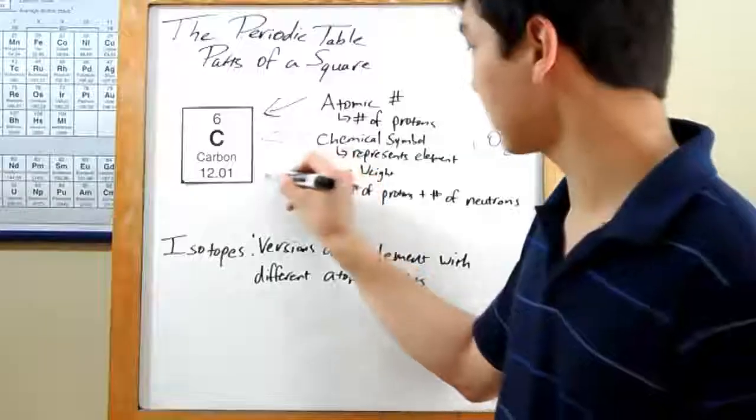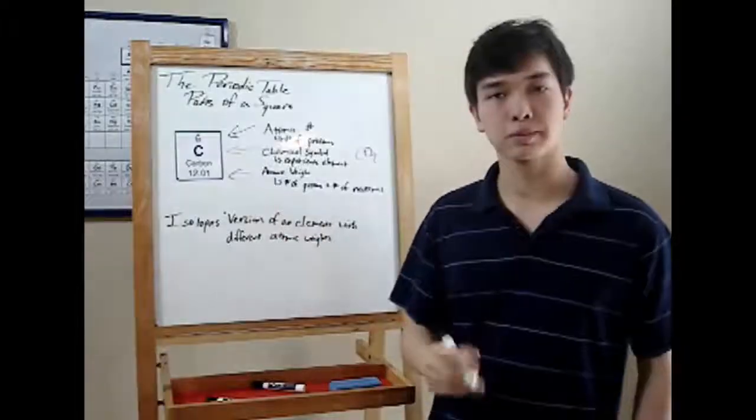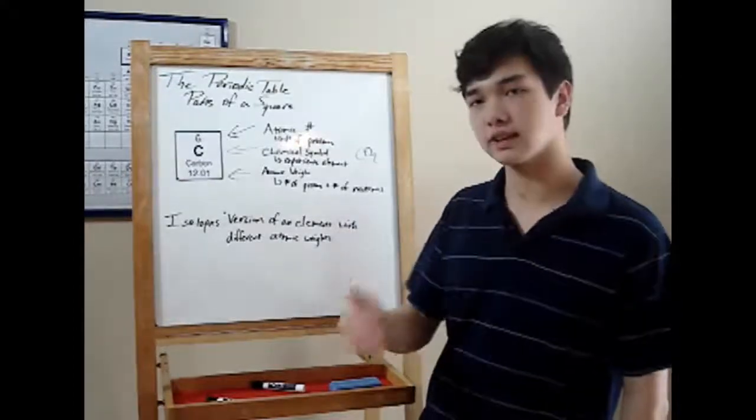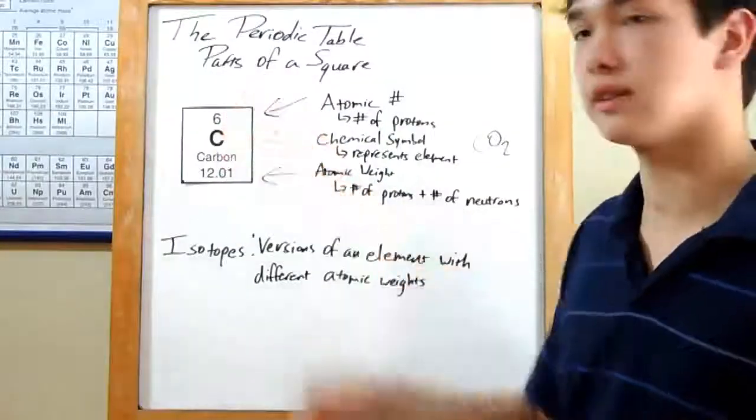Last is the atomic weight. That's the number on the bottom. That's the number of protons plus the number of neutrons. So if you want to find out the number of neutrons, just subtract the atomic number.